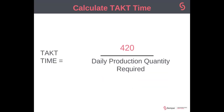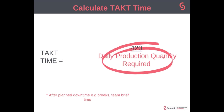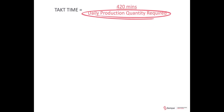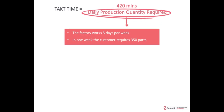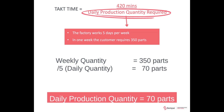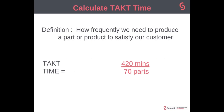Let's plug that into our calculation — the numerator is 420 minutes. Now we'll do the bottom part, which is the daily production quantity required. For this we need the last two bullet points: it works five days a week and we've got a weekly demand of 350 parts. 350 divided by 5 is 70, so the denominator is 70. 420 divided by 70 is 6 minutes — so your TAC time is 6 minutes.